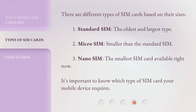There are different types of SIM cards based on their sizes: 1. Standard SIM — the oldest and largest type. 2. Micro SIM — smaller than the standard SIM. 3. Nano SIM — the smallest SIM card available right now. It's important to know which type of SIM card your mobile device requires.